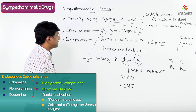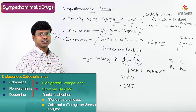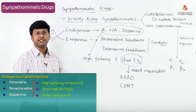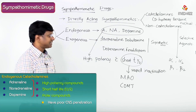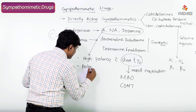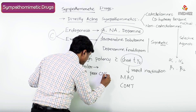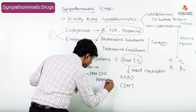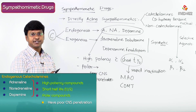An important point to remember: adrenaline, noradrenaline, and dopamine are polar compounds. Because they are polar in nature, these drugs have poor penetration into the central nervous system — they have poor CNS penetration.